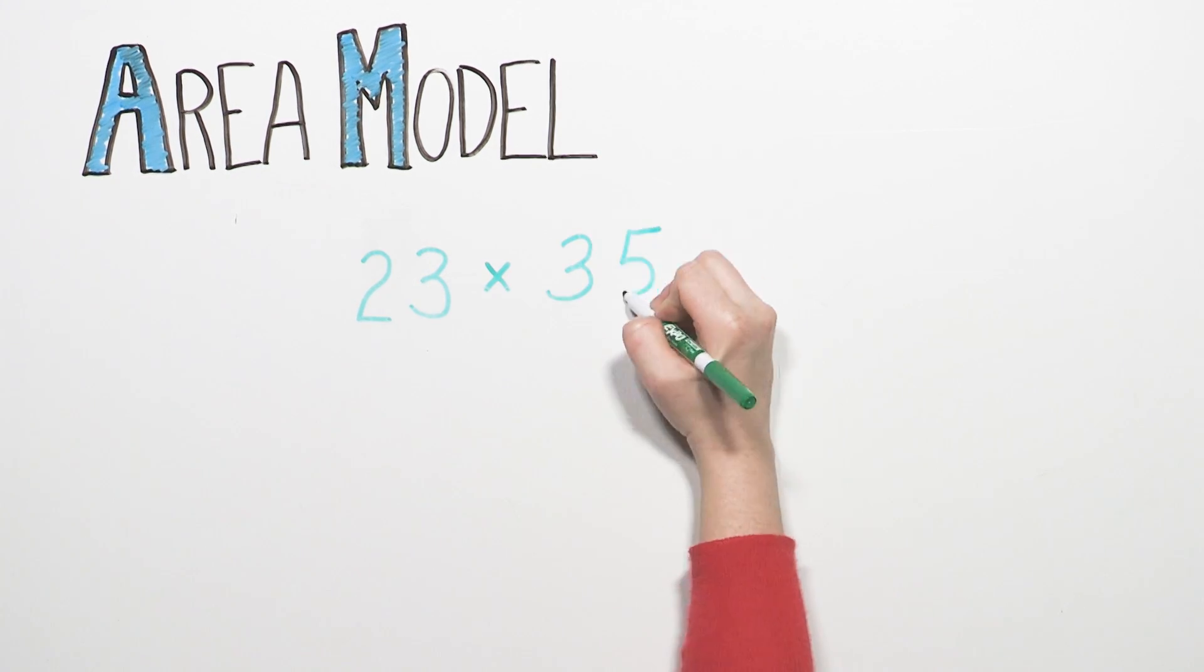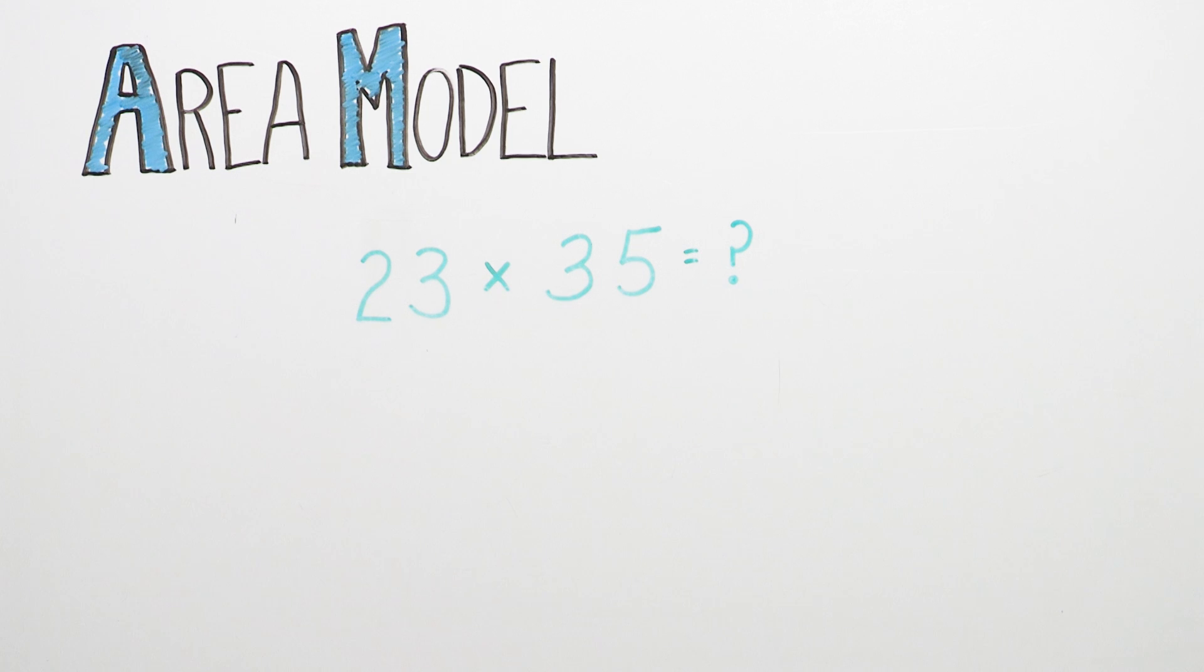When first learning to multiply two two-digit numbers, your child will use the area model.